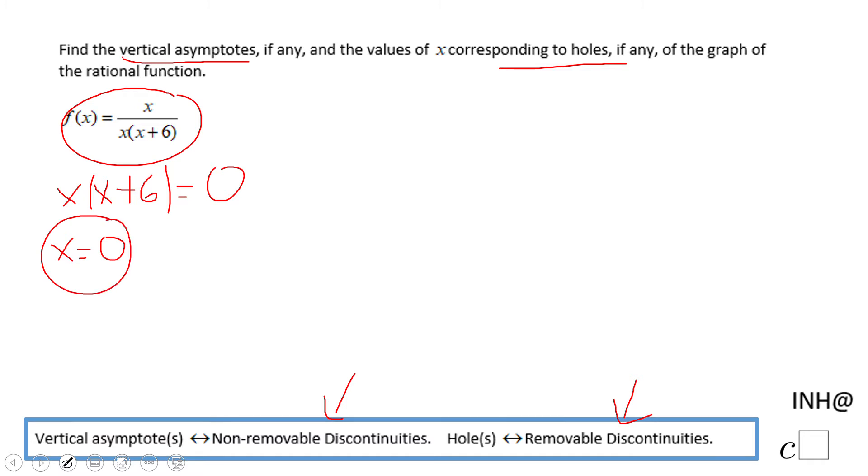We're going to get x equals zero, and the second factor is x plus six equals zero, which is going to give us x equals negative six. These are what we call discontinuities. Very simple to find them: set the denominator equal to zero.